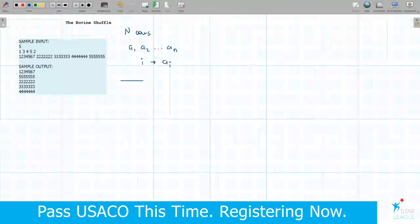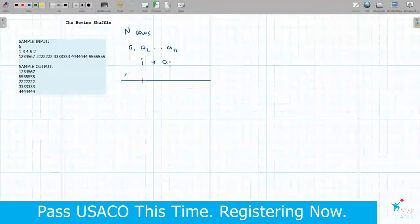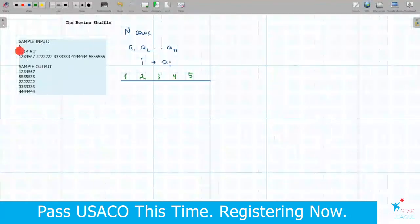So our cows are lined up. Let's draw a line, and there are some positions on this line: the first position, second position, three, four, and five. And when you say that cow i moves to position ai, for example, in this sample input, cow 1 goes to position 1. So the cow from position 1, from here, it will move to the same position here.